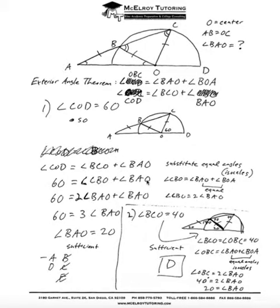Okay, so this is a data sufficiency question, a difficult data sufficiency question from one of the GMAT prep tests. So let's take a look at it here. They give us this semicircle with a couple radii forming a triangle, several triangles, obviously three triangles here.